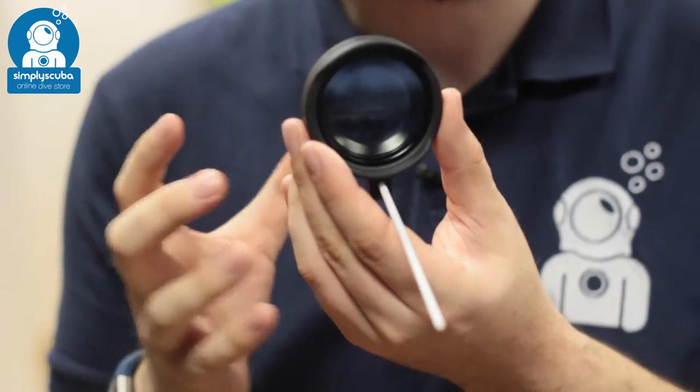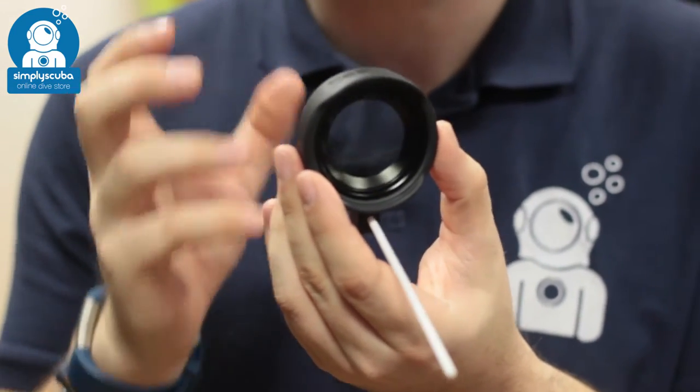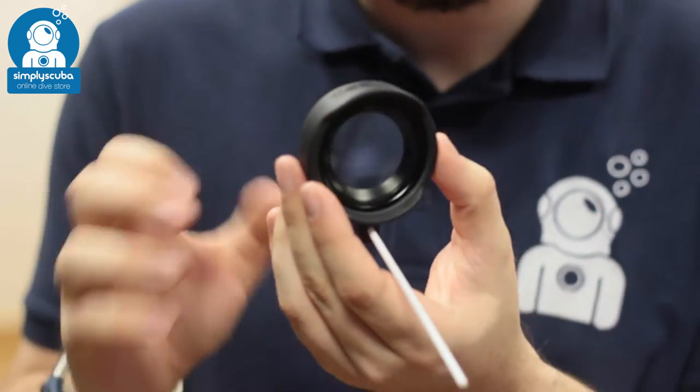So this is a lens for those real close-up shots on real small little subjects. This just attaches onto the SeaLife Micro 2.0 camera really quick and easy.